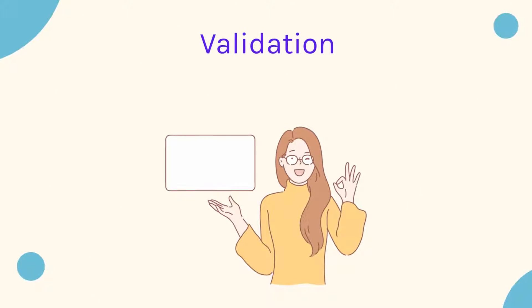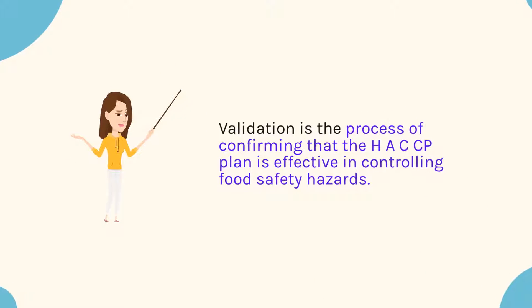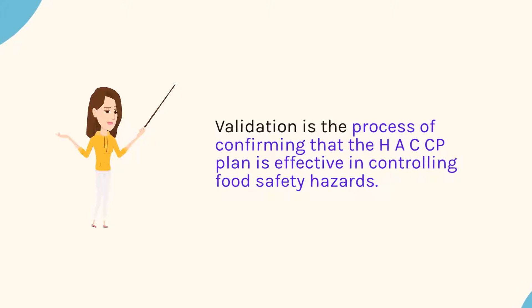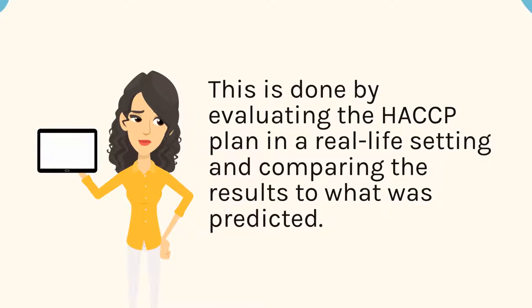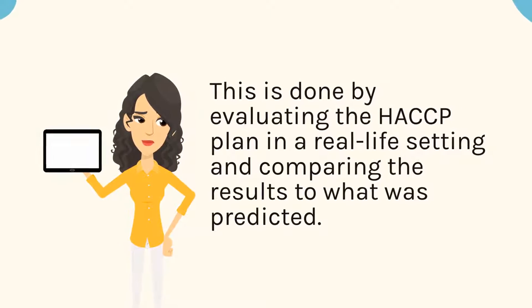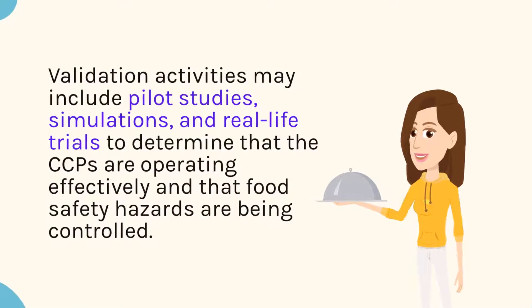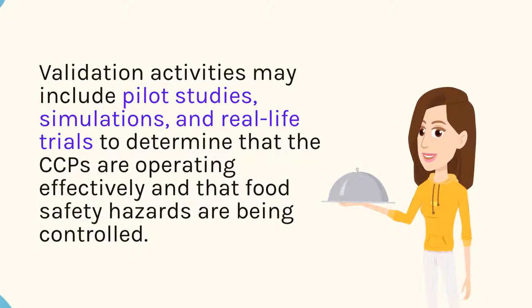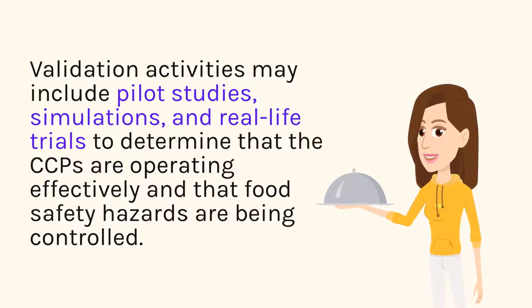Validation is the process of confirming that the HACCP plan is effective in controlling food safety. This is done by evaluating the HACCP plan in a real-life setting and comparing the results to what was predicted. Validation activities may include pilot studies, simulations, and real-life trials to determine that the CCPs are operating effectively and that food safety hazards are controlled.